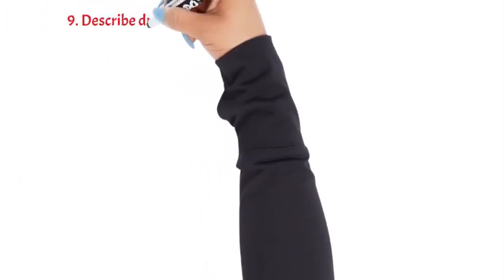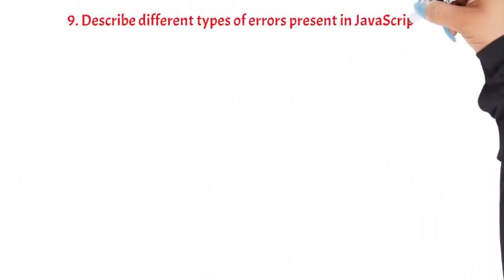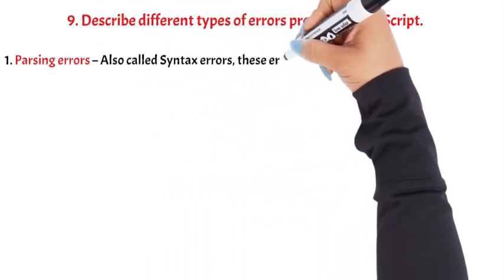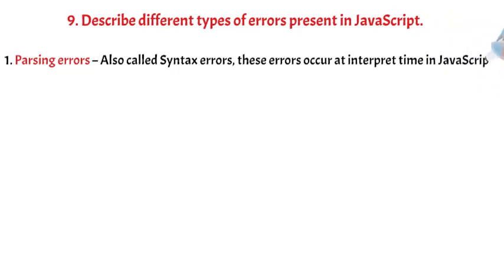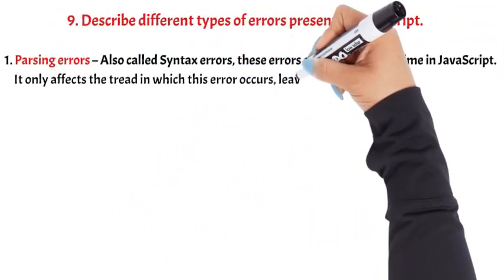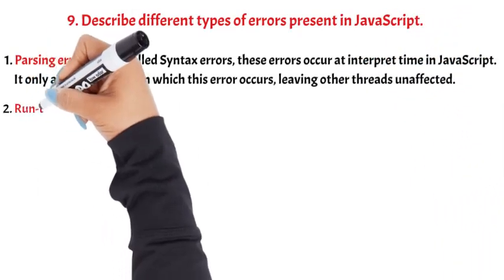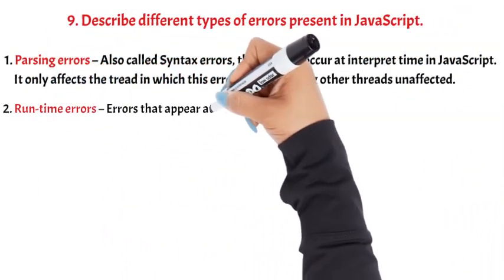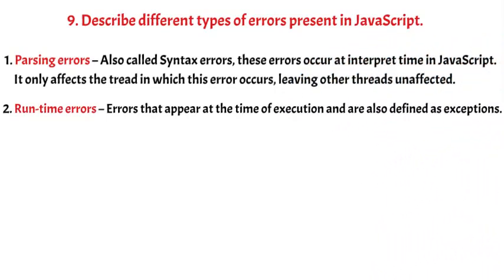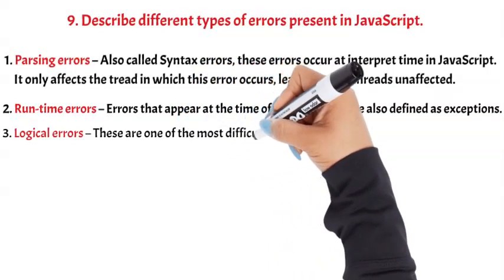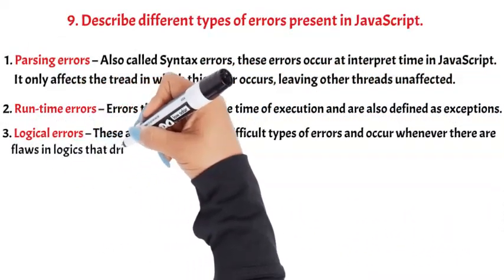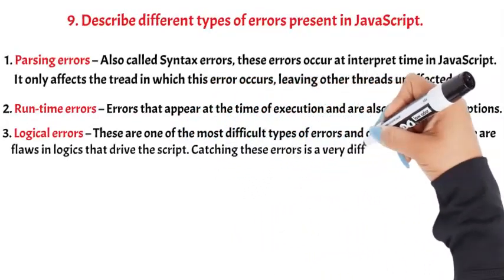Question 9: Describe different types of errors present in JavaScript. 1. Parsing errors — also called syntax errors; these occur at interpret time in JavaScript and only affect the thread in which the error occurs, leaving other threads unaffected. 2. Runtime errors — errors that appear at the time of execution, also defined as exceptions. 3. Logical errors — one of the most difficult types, occurring whenever there are flaws in the logic that drives the script; catching these errors is a very difficult task.